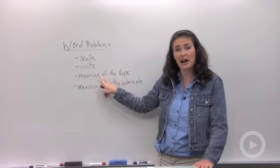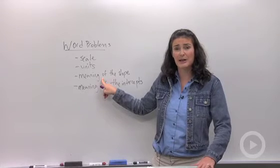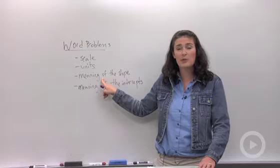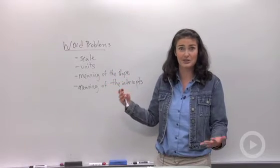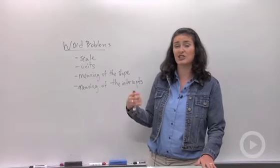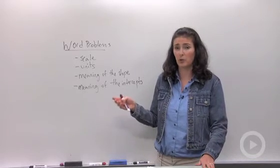One of the most common graphs of word problems is about slopes of distances and times because the slope is distance per time. It's the rate. It's how fast you're traveling. So a lot of times, you're going to be asked to interpret the slope of a word problem graph.